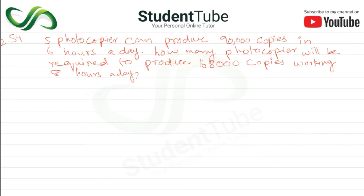Next question 2.54: 5 photocopiers can produce 90,000 copies in 6 hours a day. So 5 photocopiers working 6 hours produce 90,000 copies. How many photocopiers will be required to produce 168,000 copies working 8 hours a day? So how many photocopiers are needed when copies increase from 90,000 to 168,000 and hours increase to 8 per day?